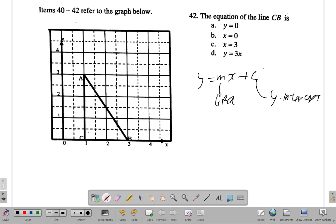Wherever the line would cut the y-axis or touch the y-axis. Now let's see what happened. Y equals - what's the gradient of CB? The gradient of CB is zero. Remember the gradient is rise over run.